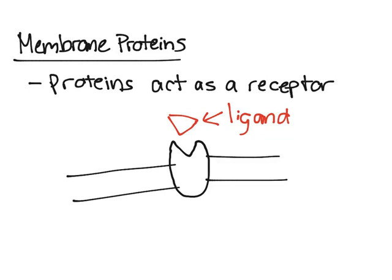More specifically, right now we're going to talk about the second messenger system with G proteins. What happens here is, first, a ligand binds to the receptor. And because the ligand can't get into the cell and bind to other receptors, there has to be a way for the signal to get passed on somewhere else — this is where a second messenger comes in.